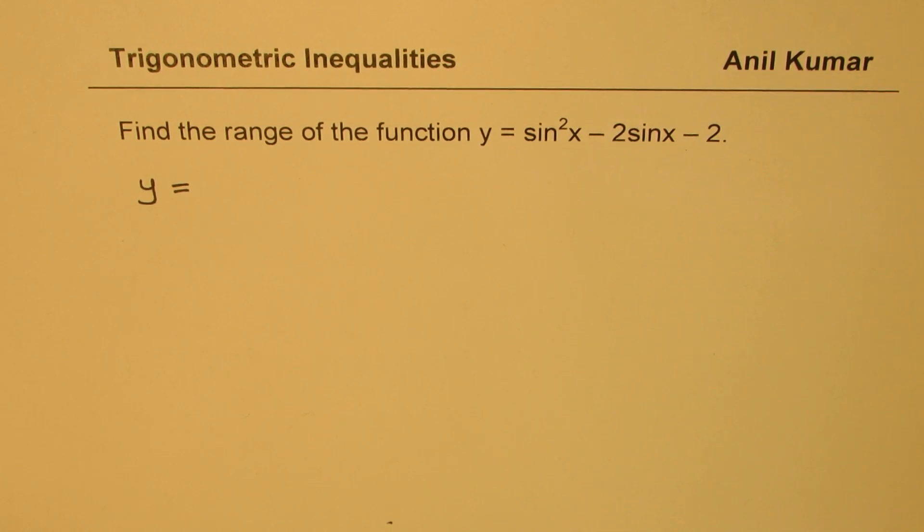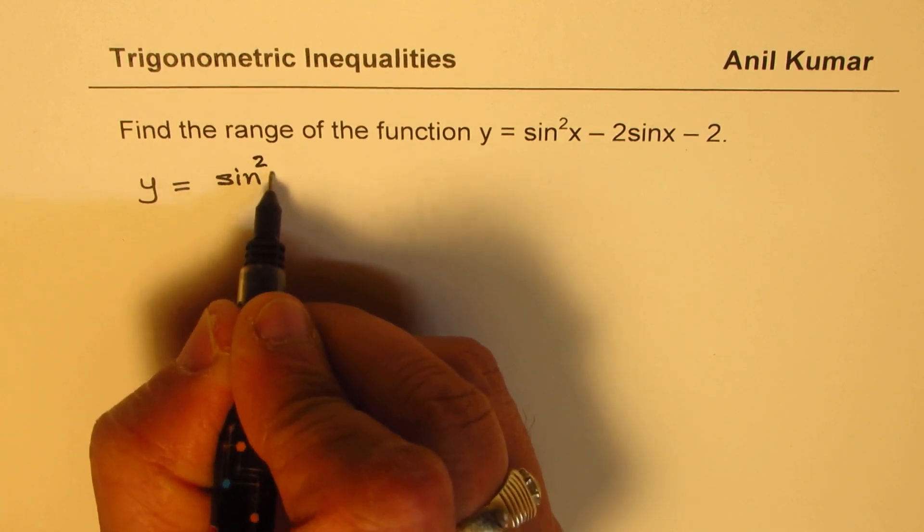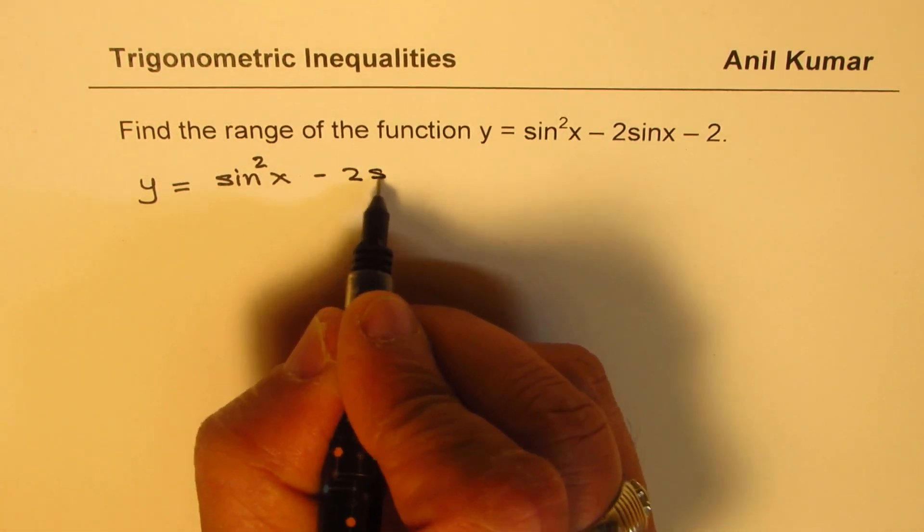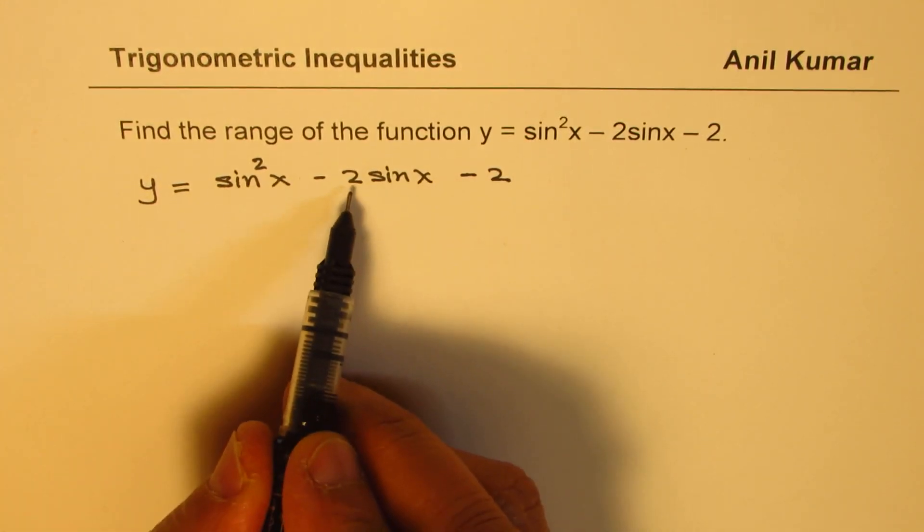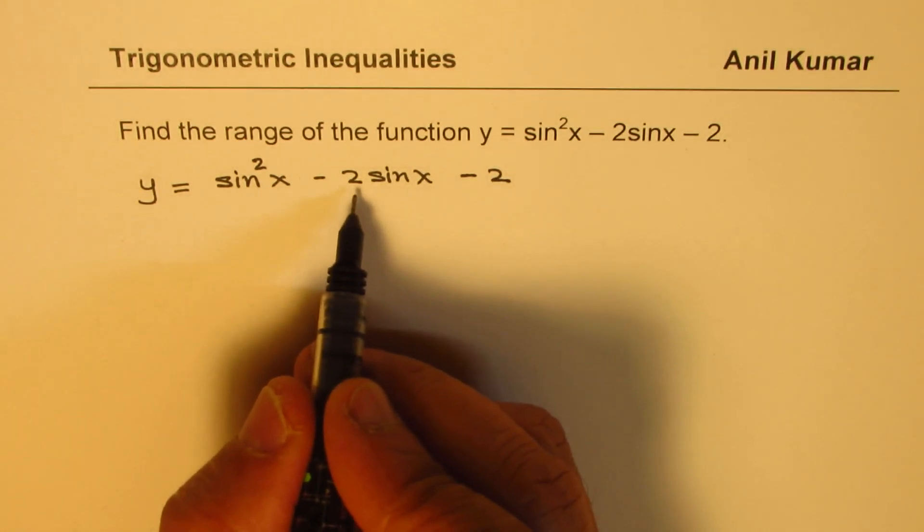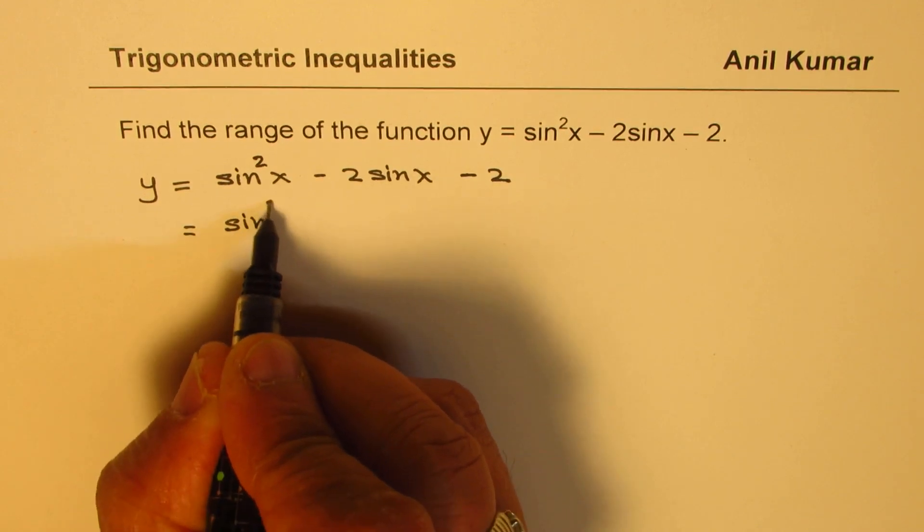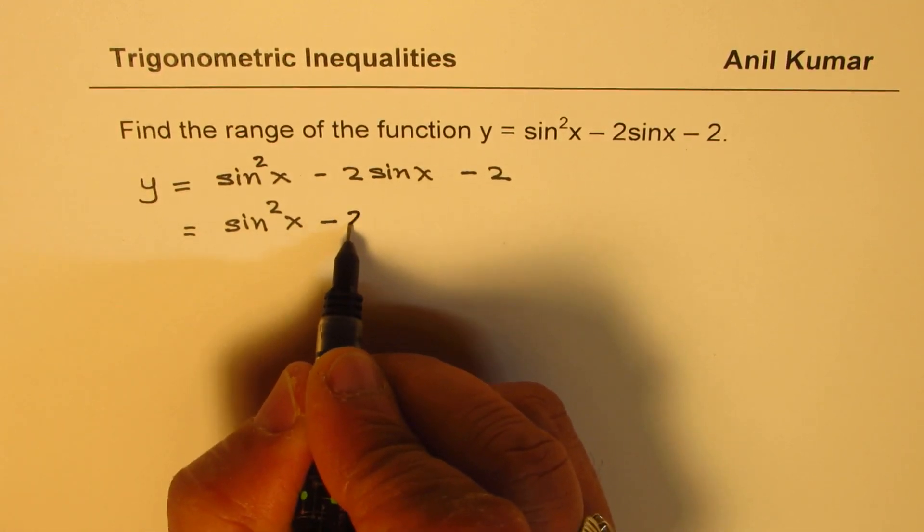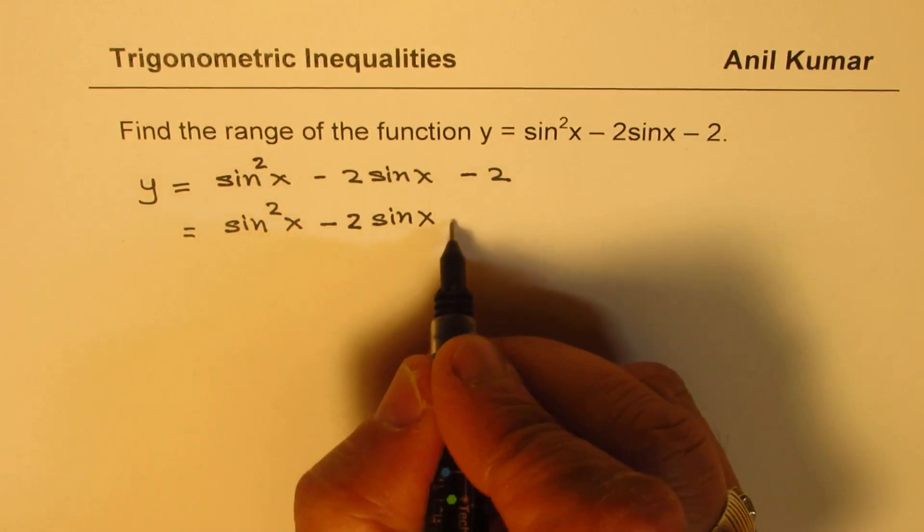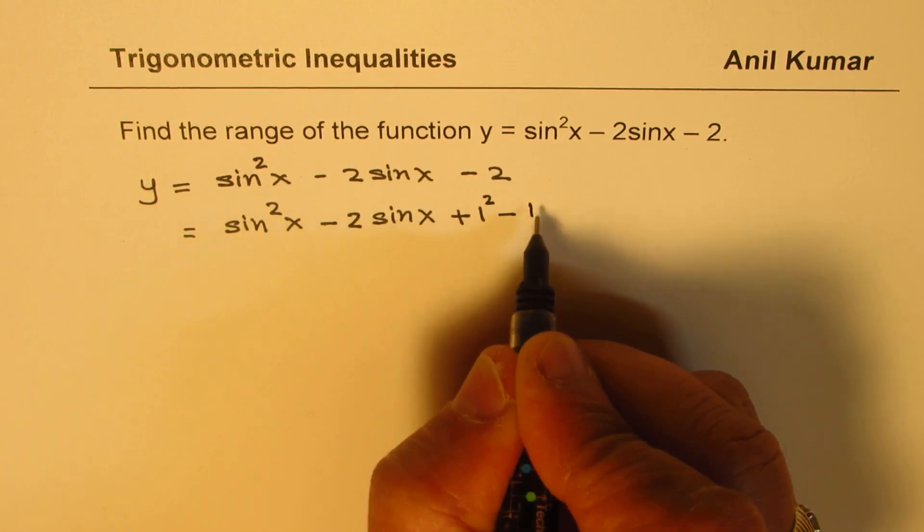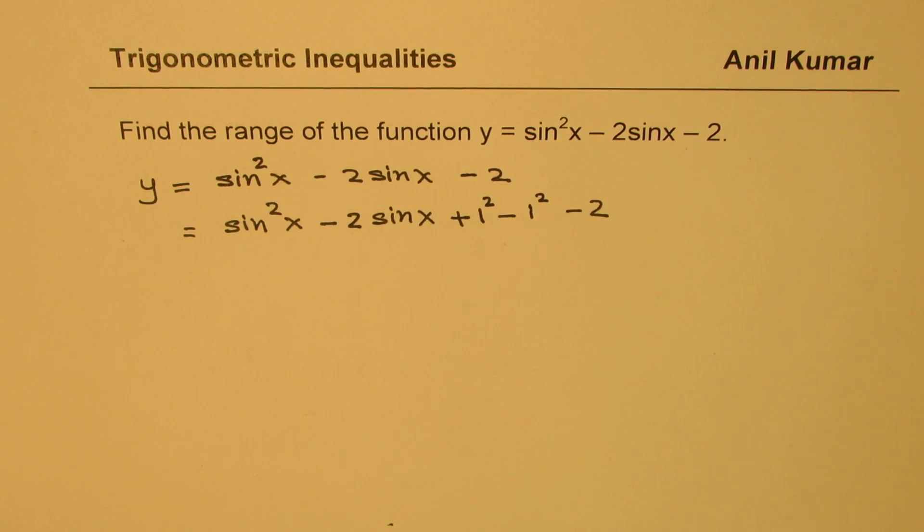We are given the equation y equals sine square x minus 2 sine x minus 2. So I could split this 2. Half of 2 is 1. So I could write this as sine square x minus 2 sine x. Now half of 2 is 1. So we can add and subtract 1 square. Exactly the step which you will do in completing the squares of quadratic equations.